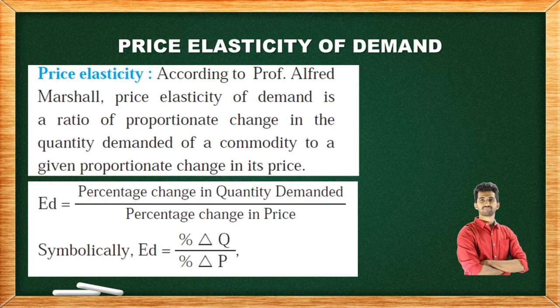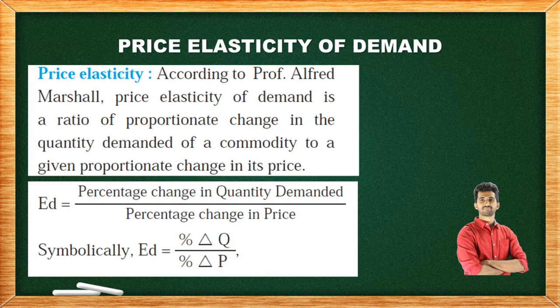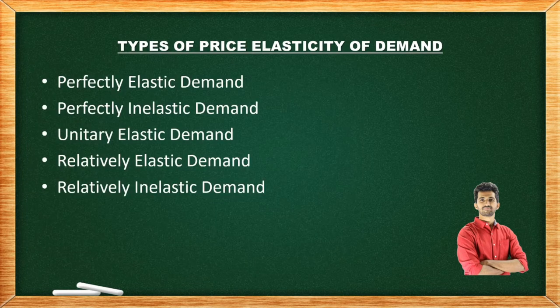Today we will try to understand Price Elasticity of Demand in detail. According to Professor Alfred Marshall, Price Elasticity of Demand is a ratio of proportionate change in the quantity demanded of a commodity to a given proportionate change in its price. Symbolically, ED is equal to percentage change in quantity demanded upon percentage change in price.